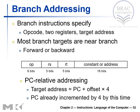For branch addressing, branch instructions specify an opcode, two registers, and a target offset. To calculate the target address, the PC is already incremented by 4. As we have seen in the diagram, the 32-bit sign-extended value of the constant is added to the incremented PC to produce the branch target address.